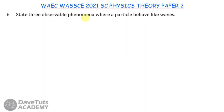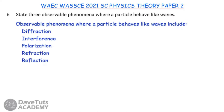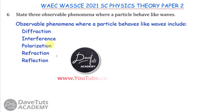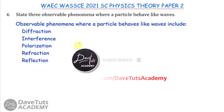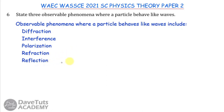Here we are asked to state three observable phenomena where a particle behaves like waves. Students, note that the question says state only, so don't waste time defining. Such phenomena include: diffraction, interference, polarization, refraction, and reflection. Any three of these five will earn full marks.